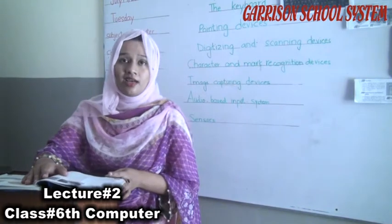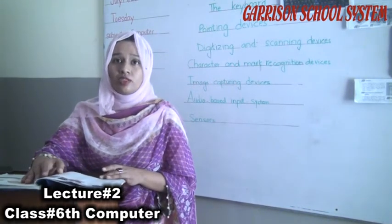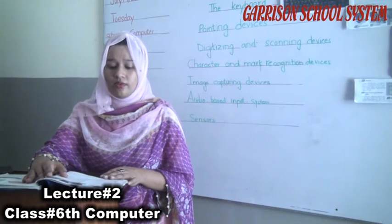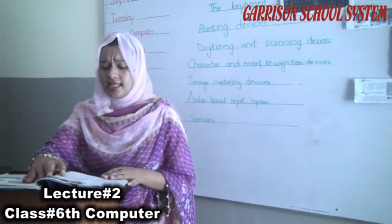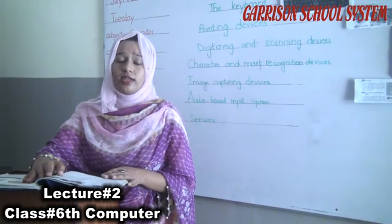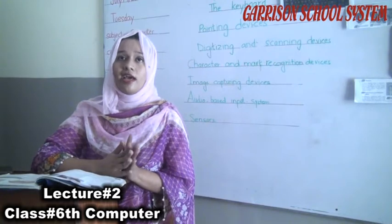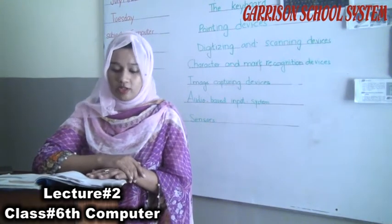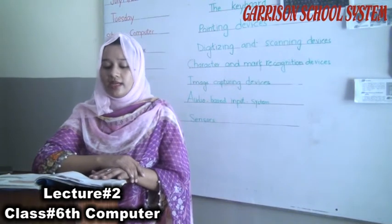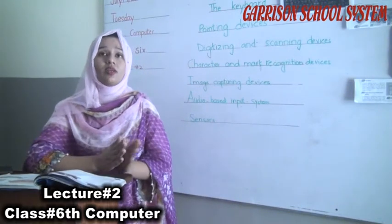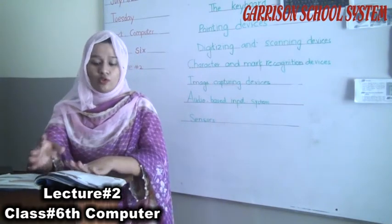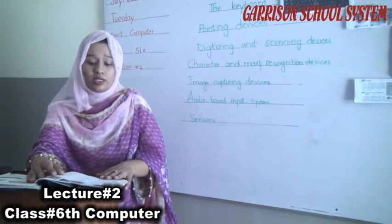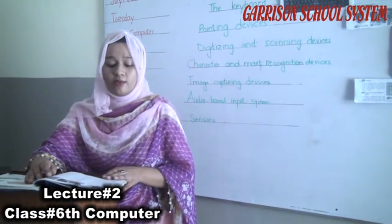A touchscreen is used both as an input device and an output device. It consists of a touch screen with a plastic glass layer. Users select and enter data by touching points on the screen. A joystick is used for gaming and consists of a vertical lever mounted on a base. Moving the lever in different directions moves the cursor. Joysticks are used in games, flight simulation programs and to control robots.